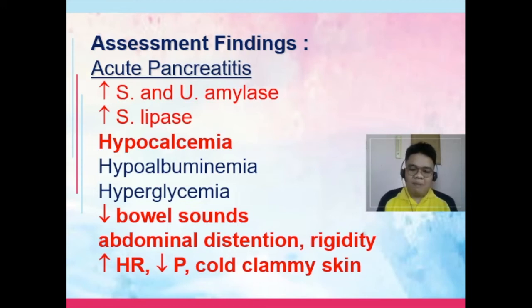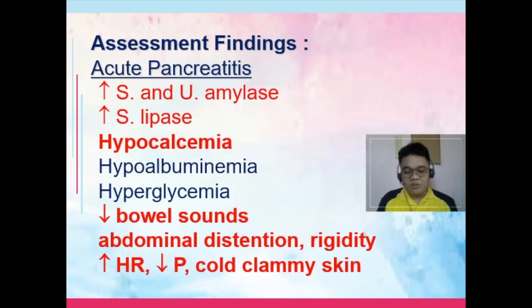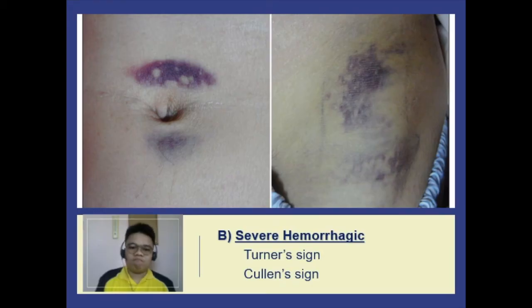There is a decrease in bowel sounds, abdominal distension and rigidity signaling peritonitis, and the patient manifests signs of shock — increased heart rate, decreased pulse, and cold clammy skin.